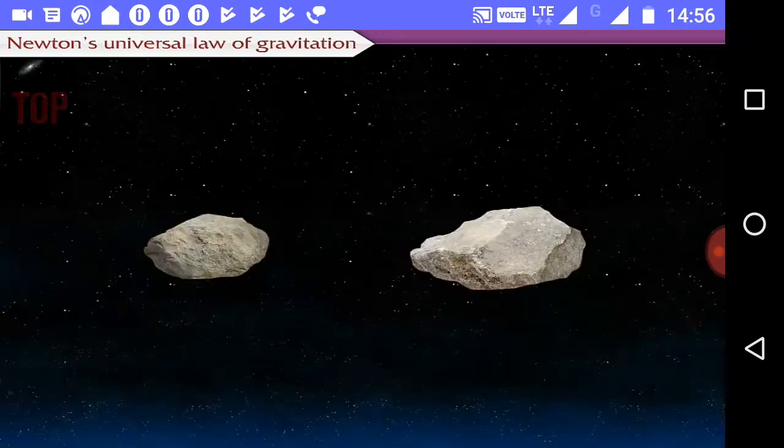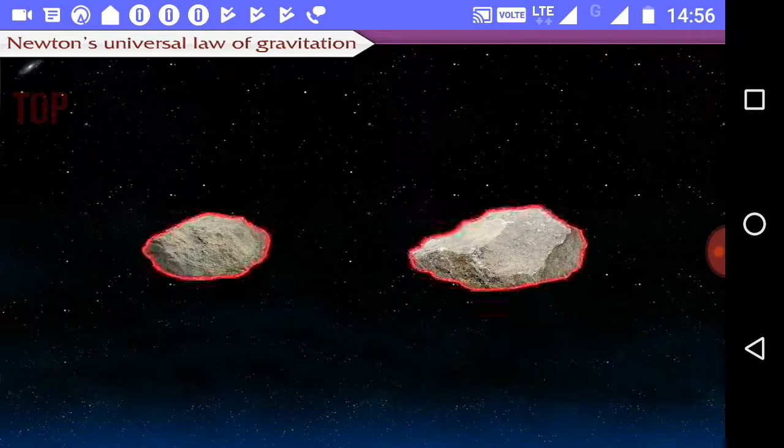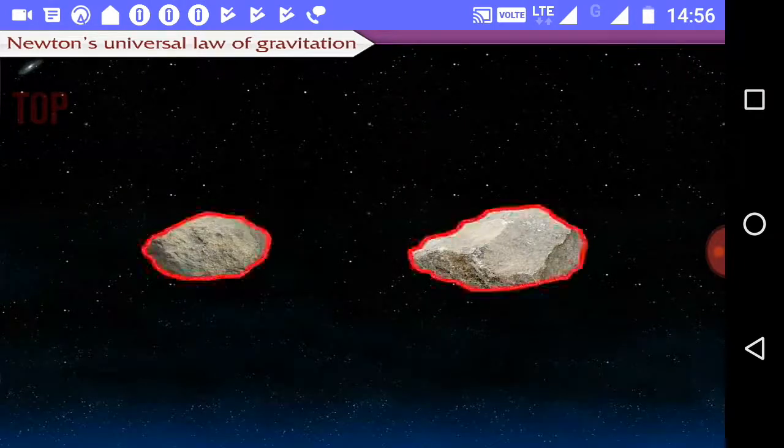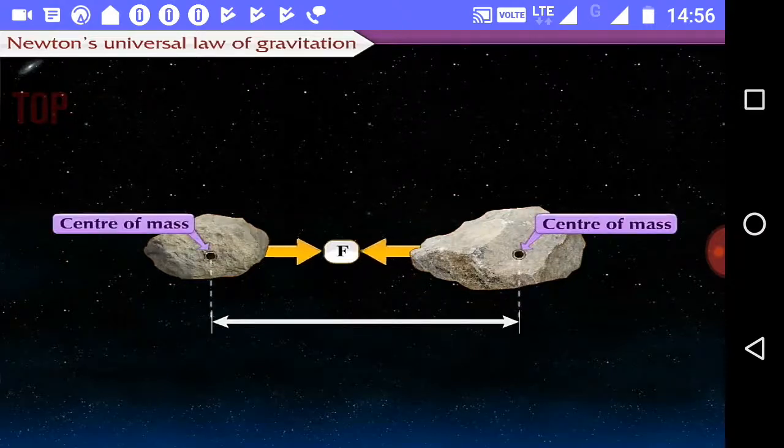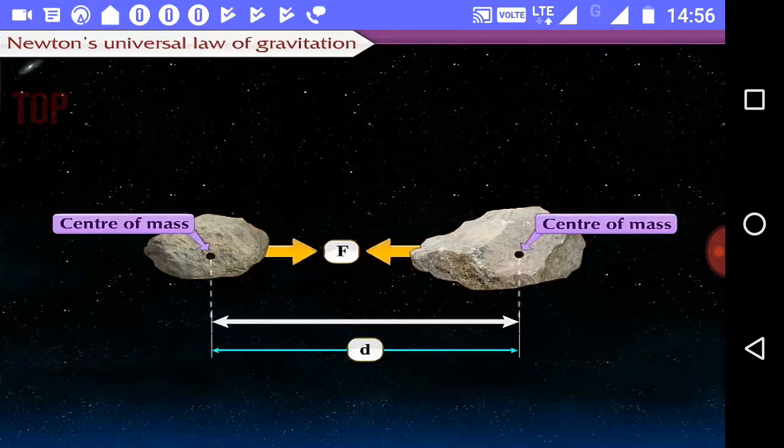But if two bodies are not spherical or having irregular shape, then the direction of force is along the line joining their centers of mass and D is taken to be the distance between two centers of mass.